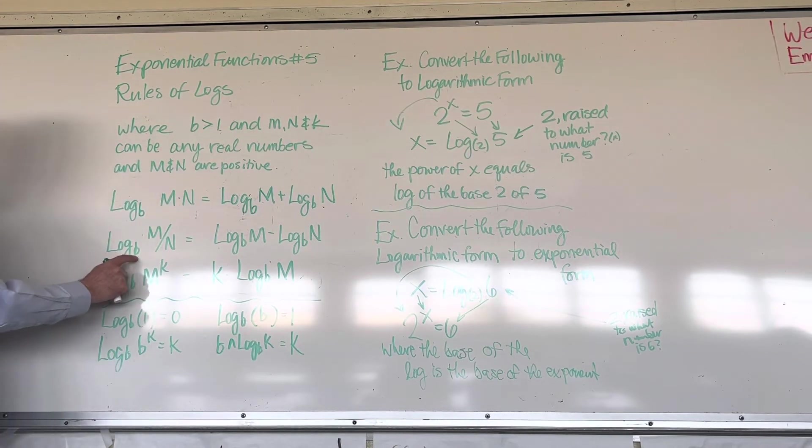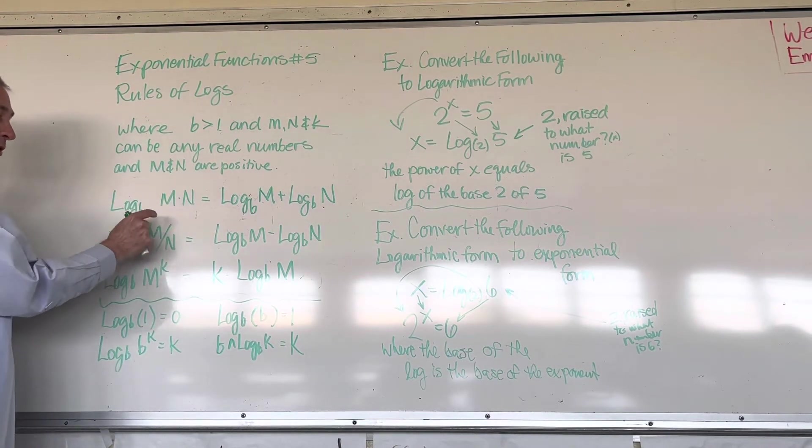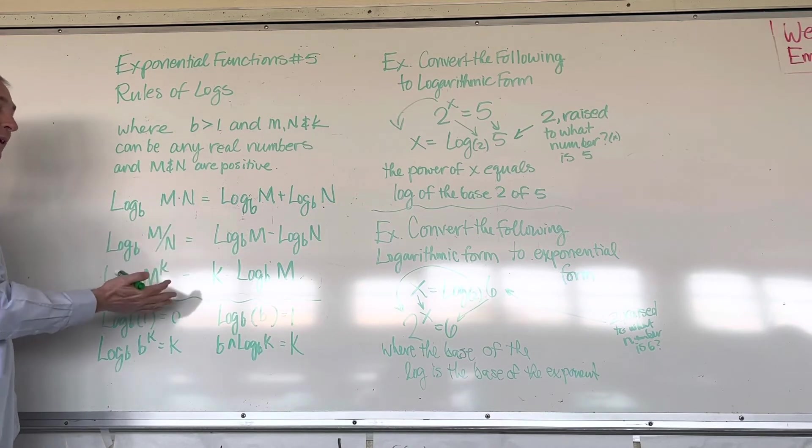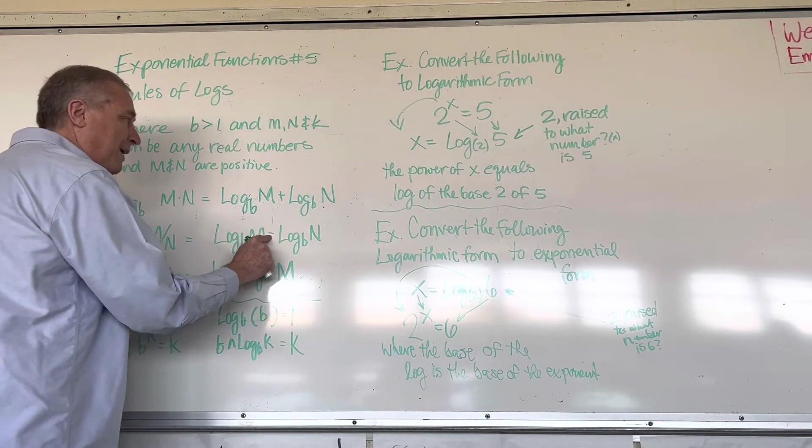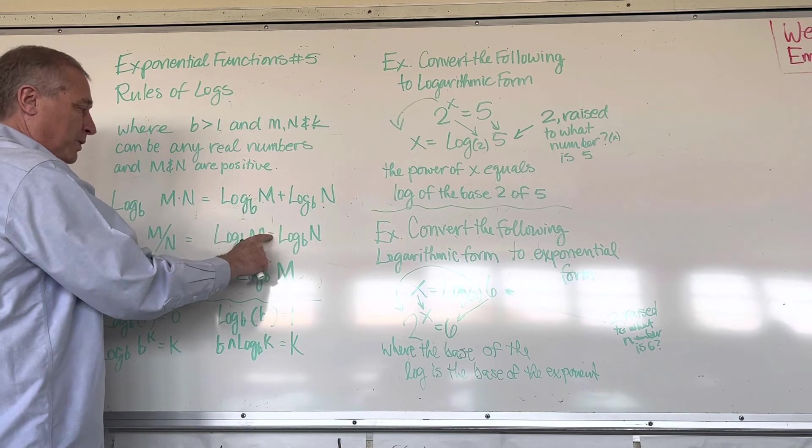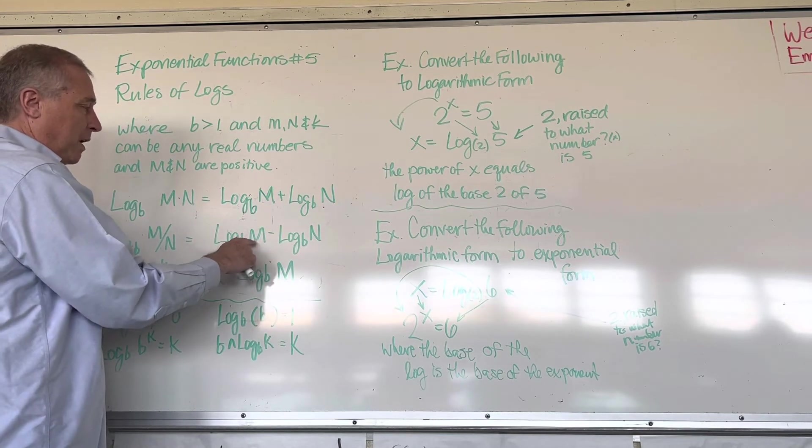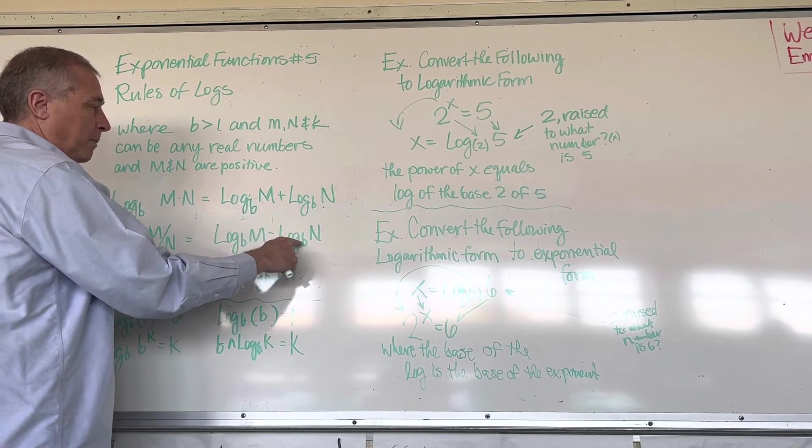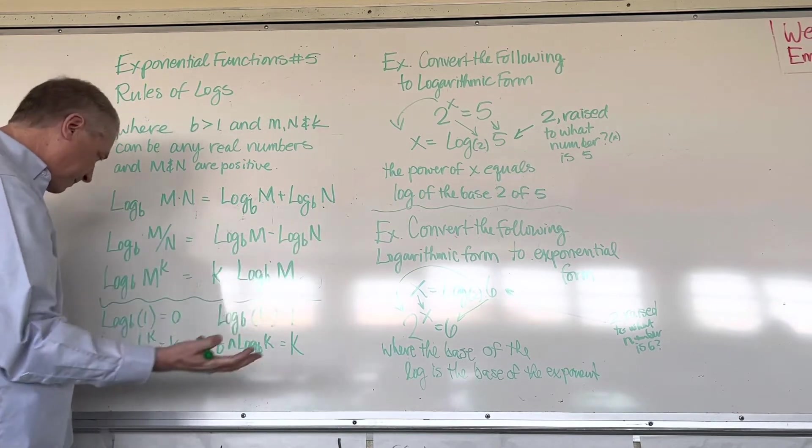Here's another one. If you have a log base B of two numbers divided by each other, M divided by N, it can be split apart and subtracted. Notice this one was added. This one was subtracted. How do you read it? Log base B of M minus log base B of N.